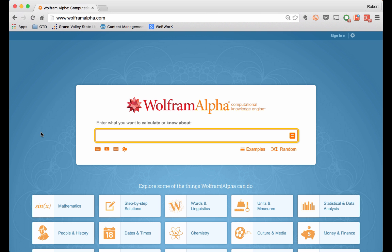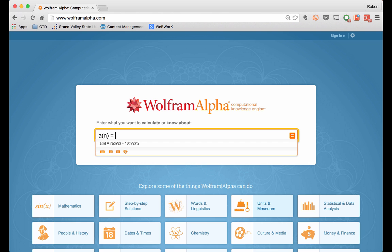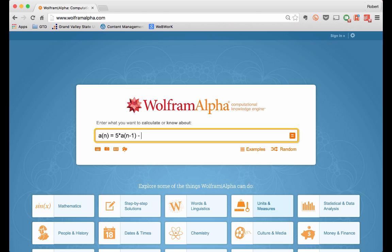Finally, a tip for using technology. On Wolfram Alpha, you can enter in recurrence relations just like you would on paper, except you should use function notation and specify the initial conditions. For example, here is the recurrence relation with initial conditions that we saw on the last slide. When you enter this in and hit enter, Wolfram Alpha will solve the recurrence relation for you.